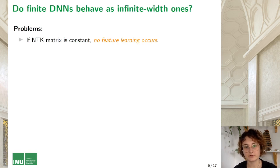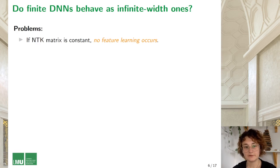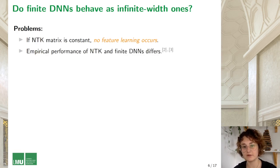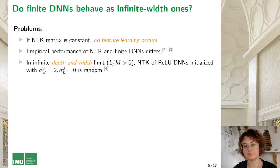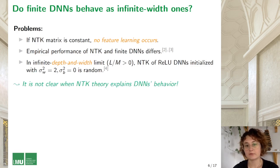We saw that neural tangent kernel theory gives us a lot of insight into infinitely wide networks. But how much can it tell us about finite ones? There are multiple problems here. First, if the NTK matrix is really constant, it means that no feature learning occurs, which arguably defies the whole purpose of deep learning. Also, in empirical studies, performance of kernel methods that use the NTK kernel is different from performance of corresponding neural networks. Finally, in a special case of real networks with certain initialization parameters, it is proven that the infinite depth and width limit of the NTK is random, which means that the implications of NTK theory don't hold. Therefore, it is not clear when NTK theory can be used to explain behavior of real networks.